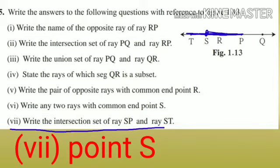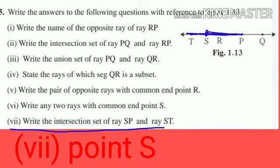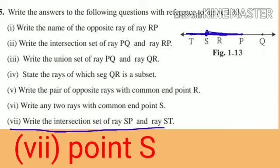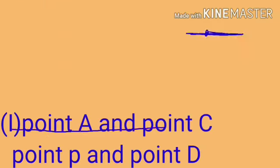Number seven: write the intersection set of ray SP and ray ST. Observe in the figure — SP and ST. Both rays intersect at point S. So your answer is point S. The intersection point of these rays is point S.